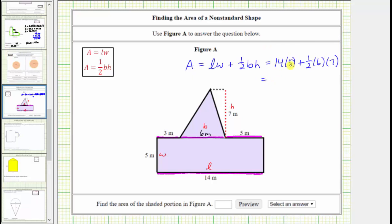Simplifying, 14 times 5 is equal to 70 plus 1 half times 6 is 3, 3 times 7 is 21. The area of the polygon is 91 square meters. Below we enter 91 and then we select the units of square meters or meters squared.